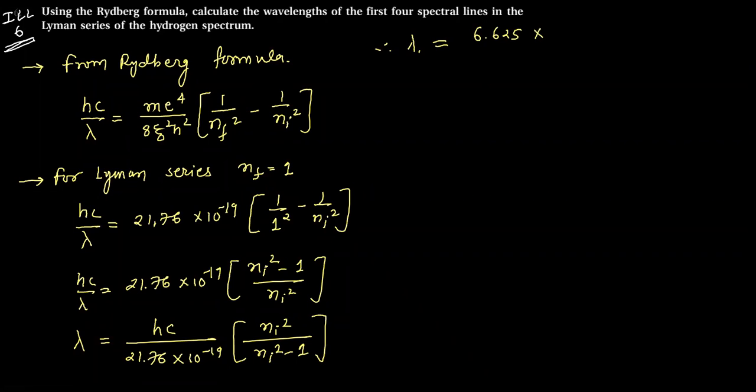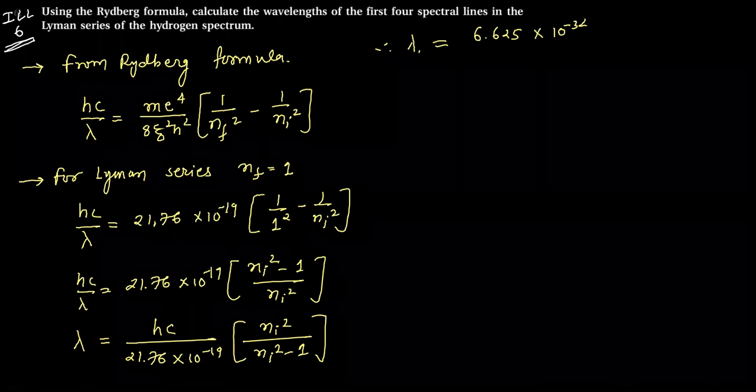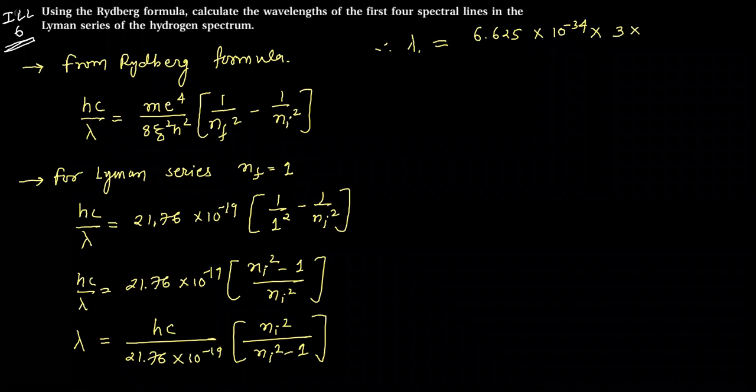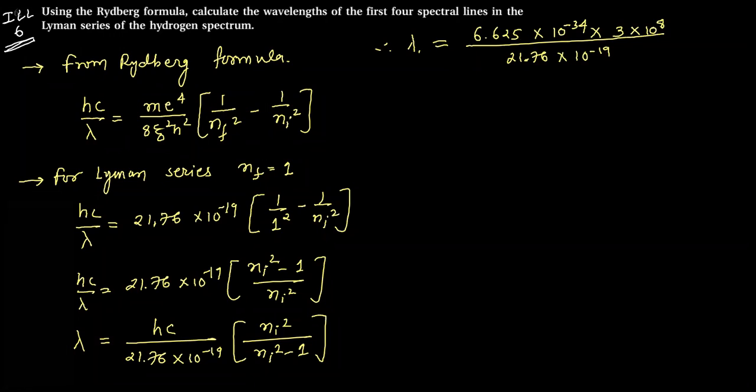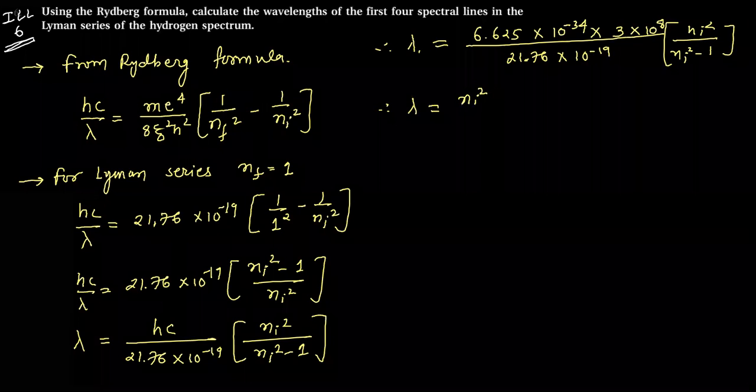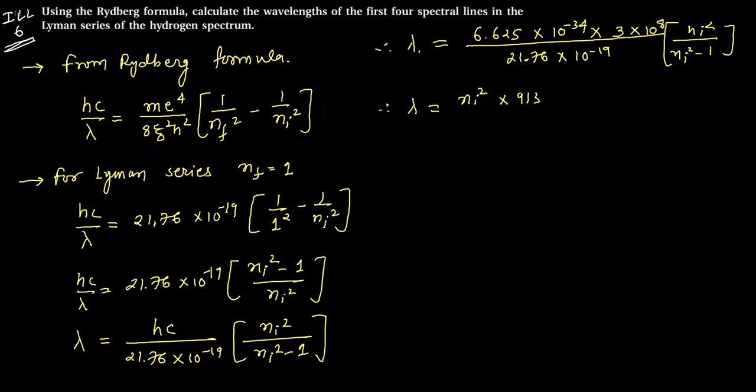6.625 into 10 to the minus 34 into 3 into 10 to the 8, divided by 21.76 into 10 to the minus 19, n i square divided by n i square minus one. So lambda equals n i square into 913.4 into 10 to the minus 10, divided by n i square minus one.